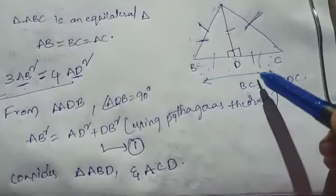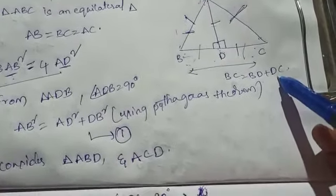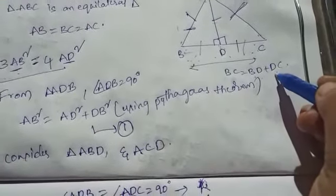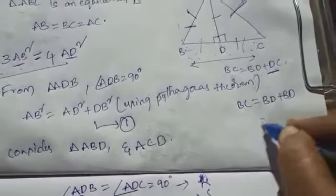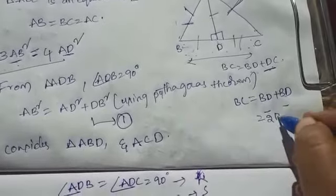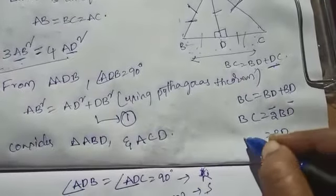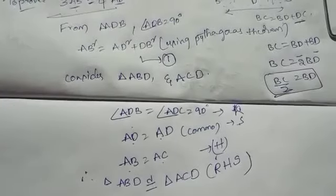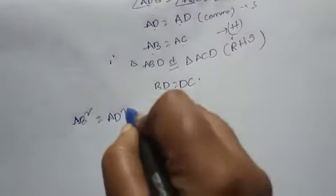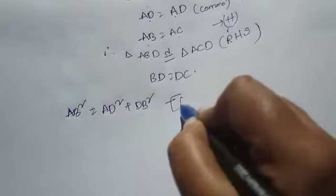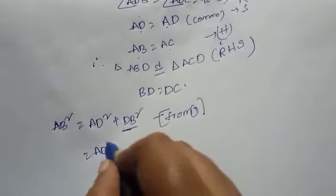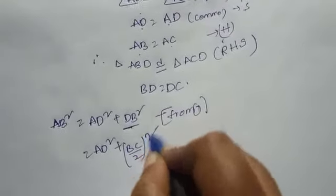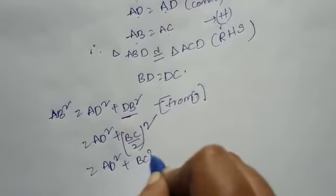See this figure: BC equal to BD plus DC. Since BD equal to DC, in place of DC we write BD. So BC equal to BD plus BD, which gives 2 BD equal to BC, therefore BD equal to BC by 2. From equation number 1: AB square equal to AD square plus DB square. In place of BD we write BC by 2, giving AD square plus BC by 2 all squared, which equals AD square plus BC square by 4.